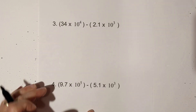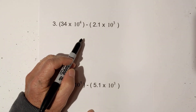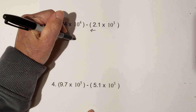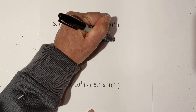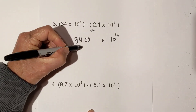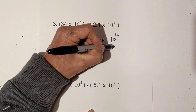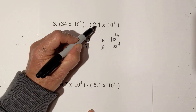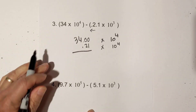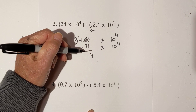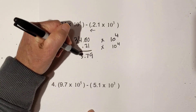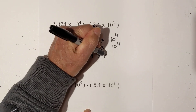In this one I have 34 times 10 to the 4th and 2.1 times 10 to the 3rd. I'll raise the 10 to the 3rd by one, moving the decimal to the left to make the number smaller, giving me 0.21 times 10 to the 4th. Then I subtract: this will become a 9, this will be a 7, this will be 3, and then 3 also — 33.79 times 10 to the 4th.